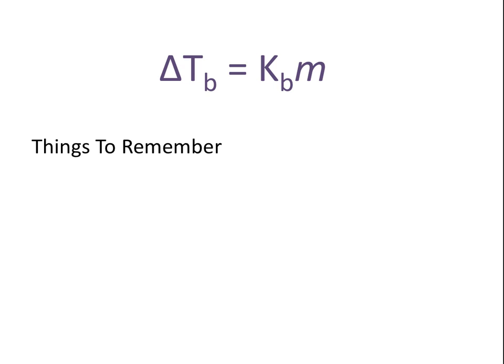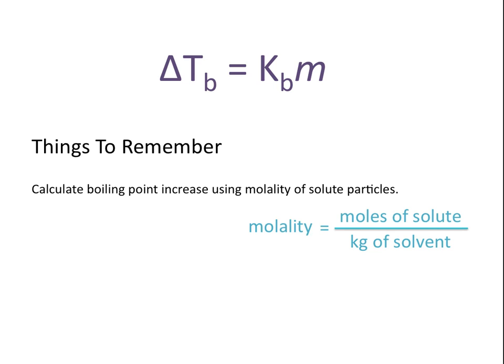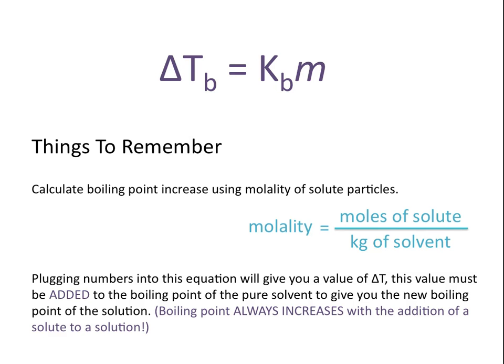Some things to remember about this equation: we calculate the boiling point increase using molality of solute particles, and remember that molality is moles of solute per kilograms of solvent — this is not the same as molarity. Also, plugging numbers into this equation gives you a value of delta T, which is the change in boiling point temperature, and this value must be added to the boiling point of the pure solvent to give you the new boiling point of the solution.